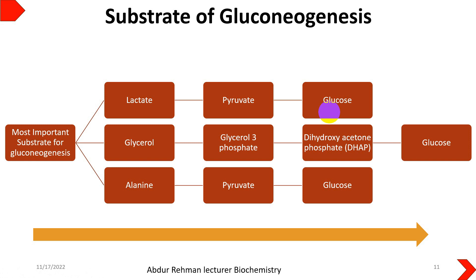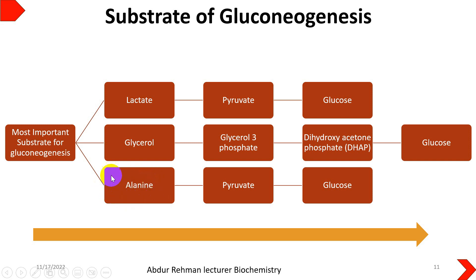We have discussed the three rearrangement steps of gluconeogenesis in our earlier video. The second precursor is glycerol, which is a lipid in nature, basically formed from triacylglycerol. It will be converted into glycerol-3-phosphate, then into dihydroxyacetone phosphate, which is one of the intermediates of the glycolysis process, and from there into a glucose molecule. Thirdly, alanine, a common amino acid, will be converted into pyruvate and then onward into glucose.